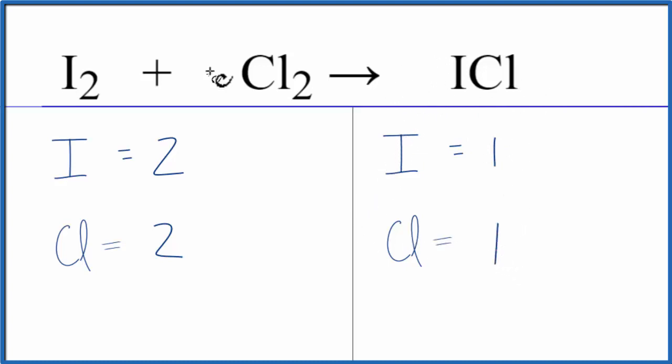So we can change the numbers in front. These are the coefficients. And right now, we assume they're just one, although it's not written. What we can't change are the subscripts. We can't change these little numbers here, and there's a one here and a one here. Again, it's not written, but we assume it to be there.